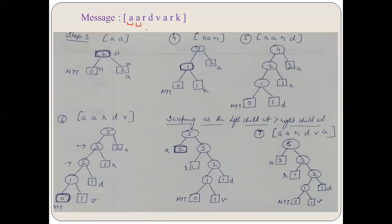In step four, we update R in the tree. R is occurring for the first time, so the NYT node gives birth to two nodes again — one NYT node with weight zero and one symbol node R with weight one. The other parts remain the same. The parent weight becomes zero plus one equals one, and then one plus two equals three. This is the tree updation for R.